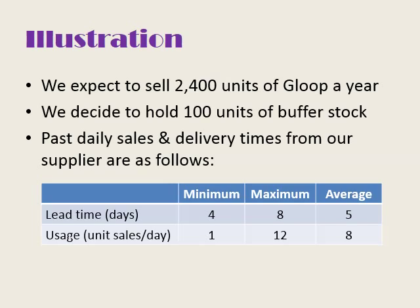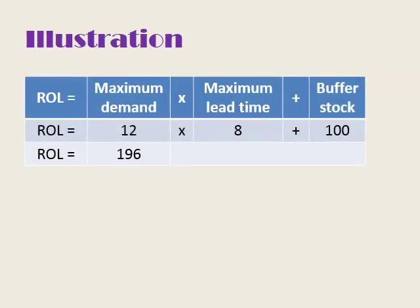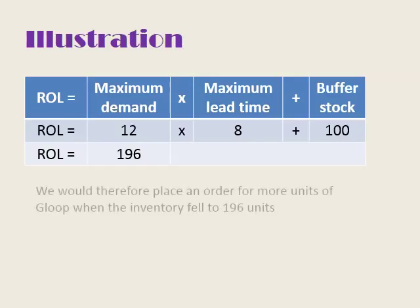We've also analysed the daily usage or sales of this product. The minimum number sold in a day is 1, the maximum is 12, and the average is 8. Putting those numbers into our formula: maximum demand is 12 units, maximum lead time is 8 days, and buffer stock is 100. So 12 × 8 = 96, plus 100, gives us a reorder level of 196 units.